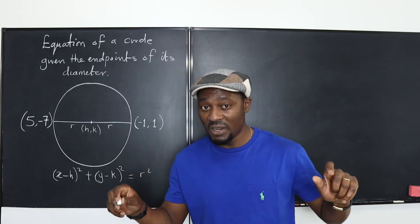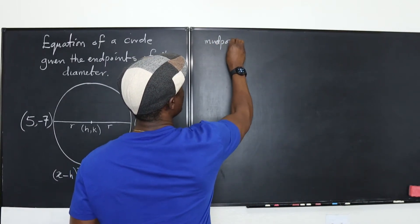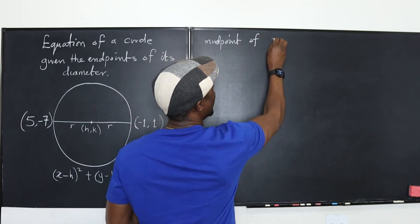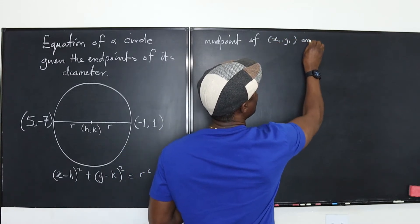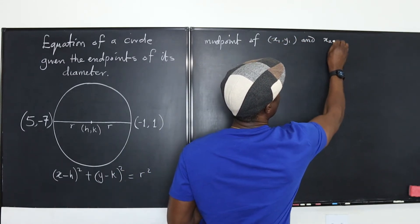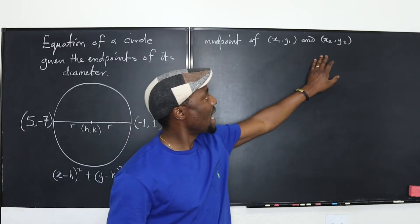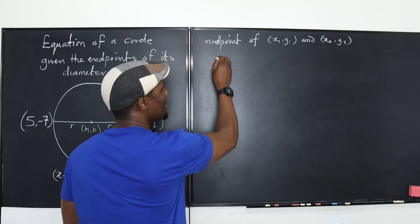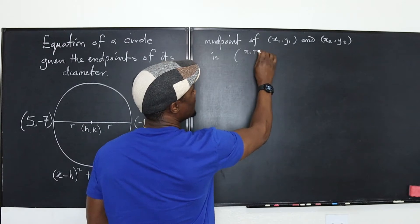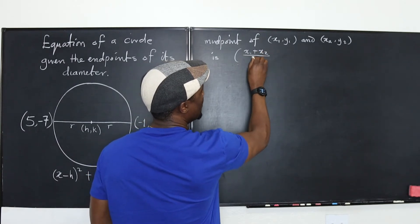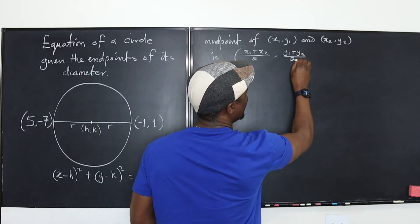Remember the midpoint formula? It tells you that the midpoint of x1, y1 and x2, y2, if you have two points, x1, y1 and another point, x2, y2 is given as x1 plus x2 over 2, y1 plus y2 over 2.